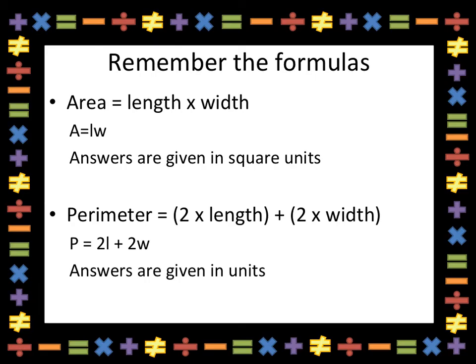First, let's remember the formulas. Area is length times width. You will be given the formula on assessments. It's important to remember that for area, your answers are given in square units. Perimeter is 2 times the length and 2 times the width.